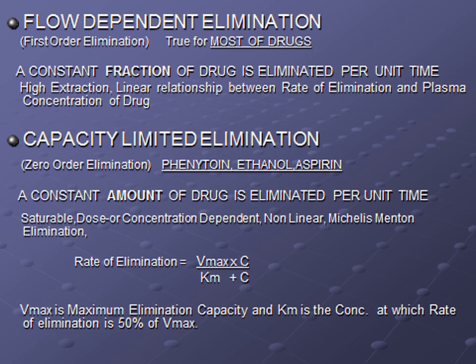Most drugs follow first-order elimination. In first-order elimination, a constant fraction of drug is eliminated per unit time. In zero-order elimination, a constant amount of drug is eliminated per unit time. We will go to the next slide for further explanation of these two kinds of elimination kinetics.